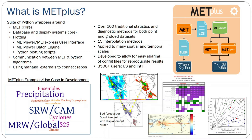We have over 100 traditional statistics and diagnostic methods for both point and gridded data sets, with lots of different interpolation methods. This has been applied to many spatial and temporal scales ranging from 5 to 15 minute high-resolution modeling to multidecadal climate simulations. The configuration files are what make it possible to have reproducible results. METPLUS also has advanced diagnostic capabilities such as object-based methods, scorecarding, performance diagrams, and the ability to look at statistics on a spatial map.